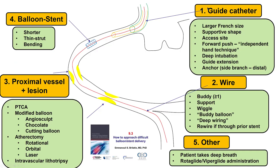When there is difficulty with delivering equipment, options include: getting more support by using a larger guide, a guide extension, or techniques such as the side branch anchor technique. A second option is to use a more supportive wire, a buddy wire, or a wiggle wire. Third is to perform additional preparation of the lesion, usually with balloon angioplasty, but sometimes with a modified balloon, atherectomy, or lithotripsy. Another option is to use different stents or balloons — shorter or thin-strut stents. Finally, having the patient take a deep breath or giving a lubricious solution such as rotaglide or viperglide can help, and all this is reviewed in video 9.3.